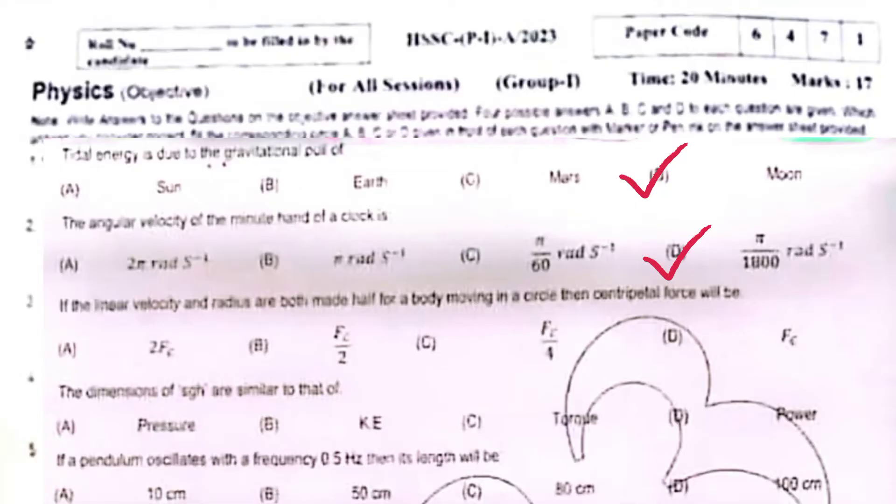If the linear velocity and radius are both made half for a body moving in a circle, then centripetal force will be centripetal force divided by four.